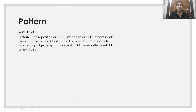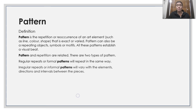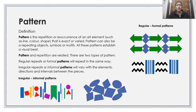Pattern. Pattern is the repetition or reoccurrence of an art element such as line, colour and shape, that is exact or varied. Patterns can be repeating objects, symbols or motifs. All these patterns establish a visual beat. Pattern and repetition are related. There are two types of patterns: regular repeats or formal patterns, which repeat in the same way; and irregular repeats or informal patterns, which vary the elements, directions and intervals between the pieces. You can see there are regular ones and informal ones.